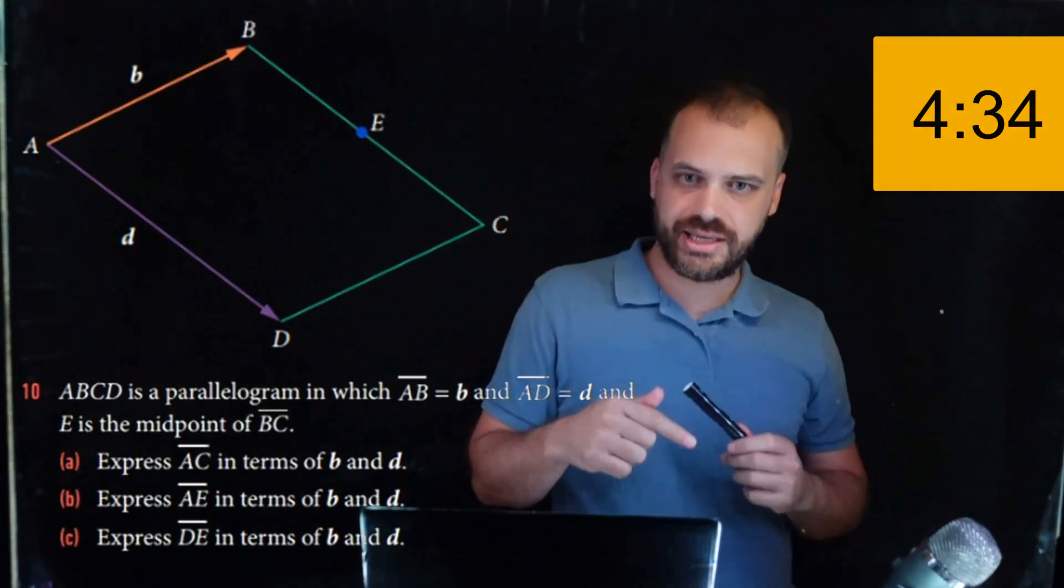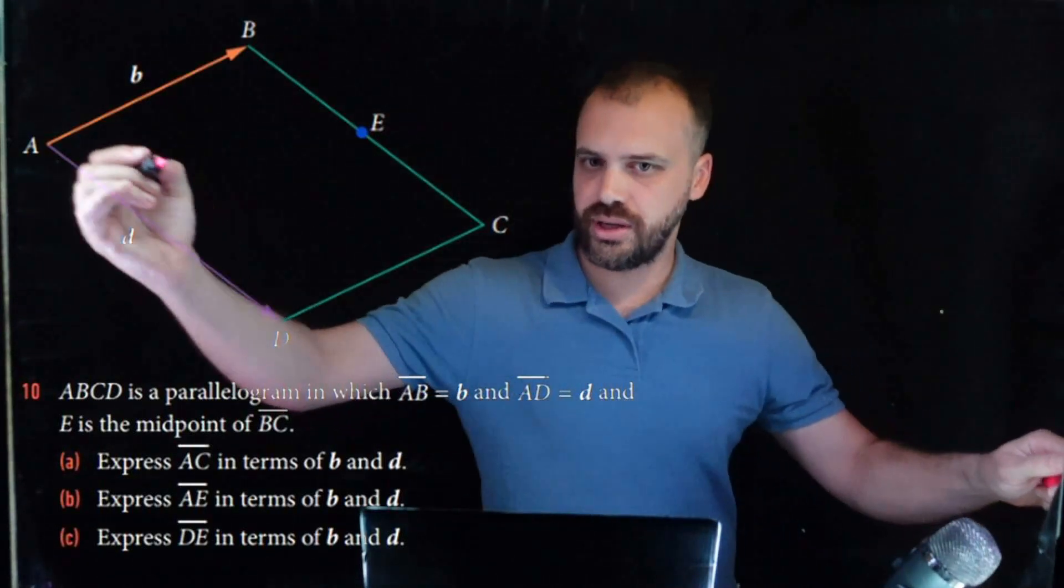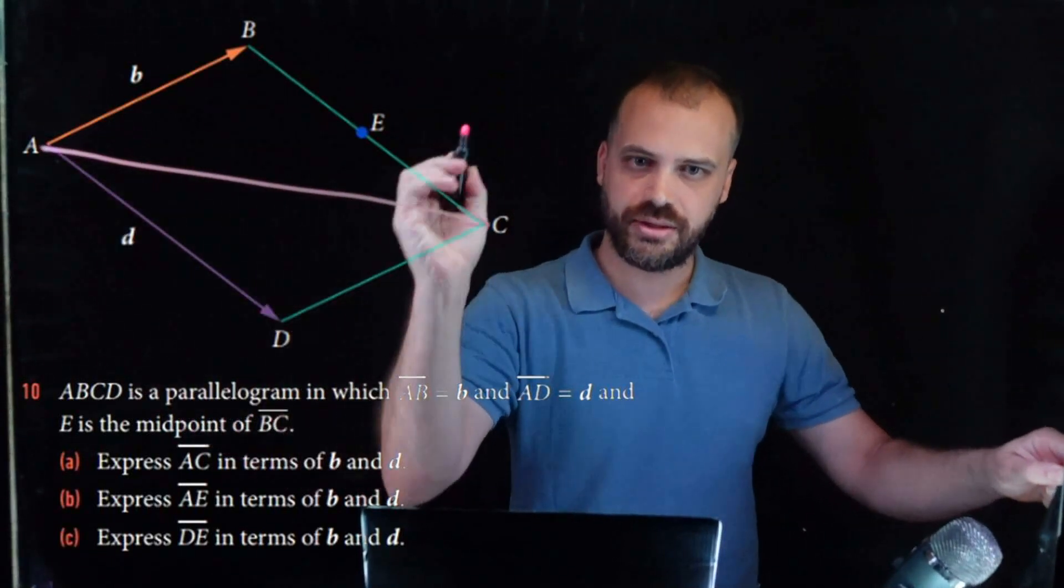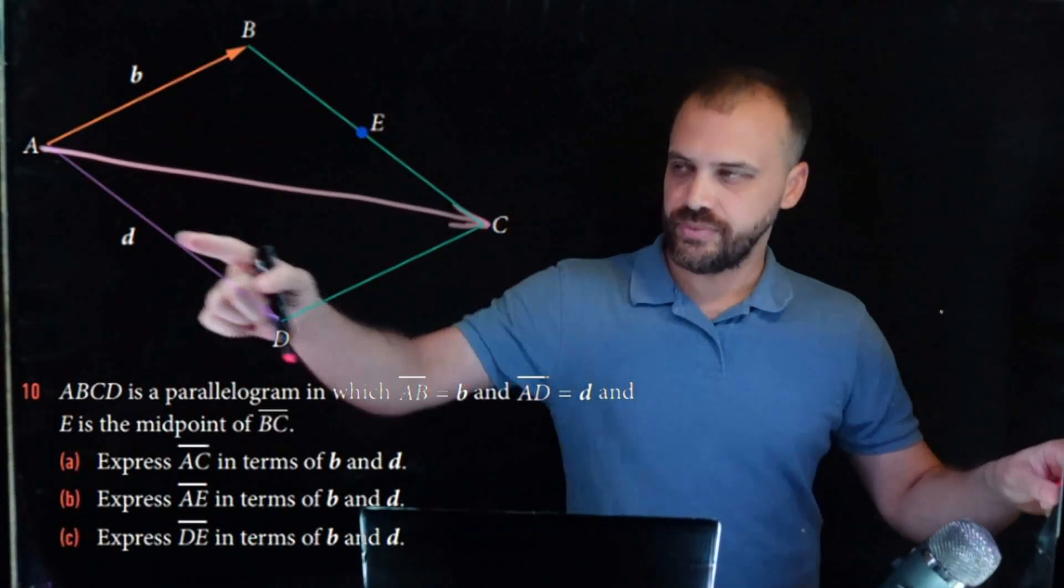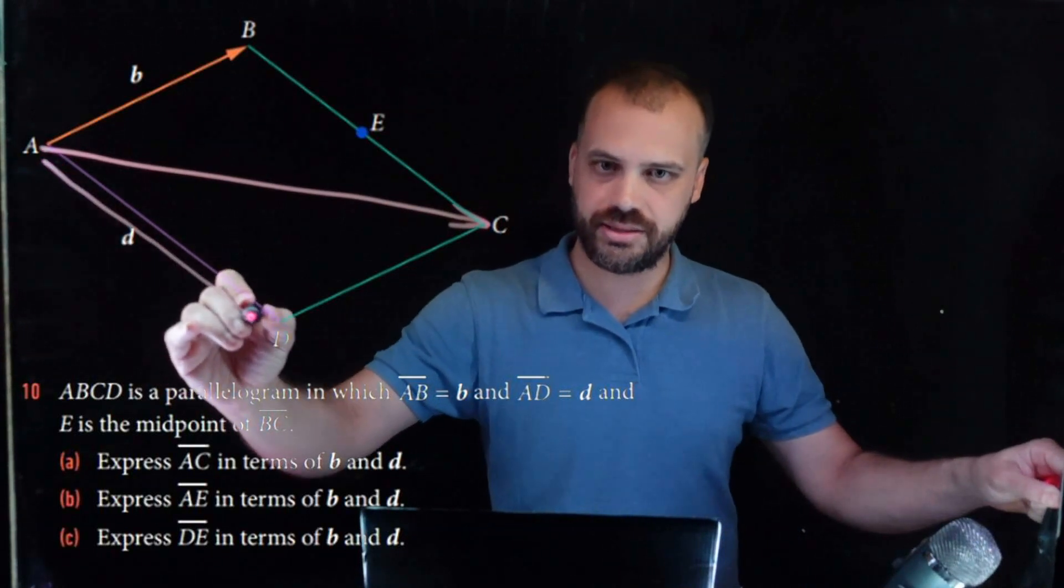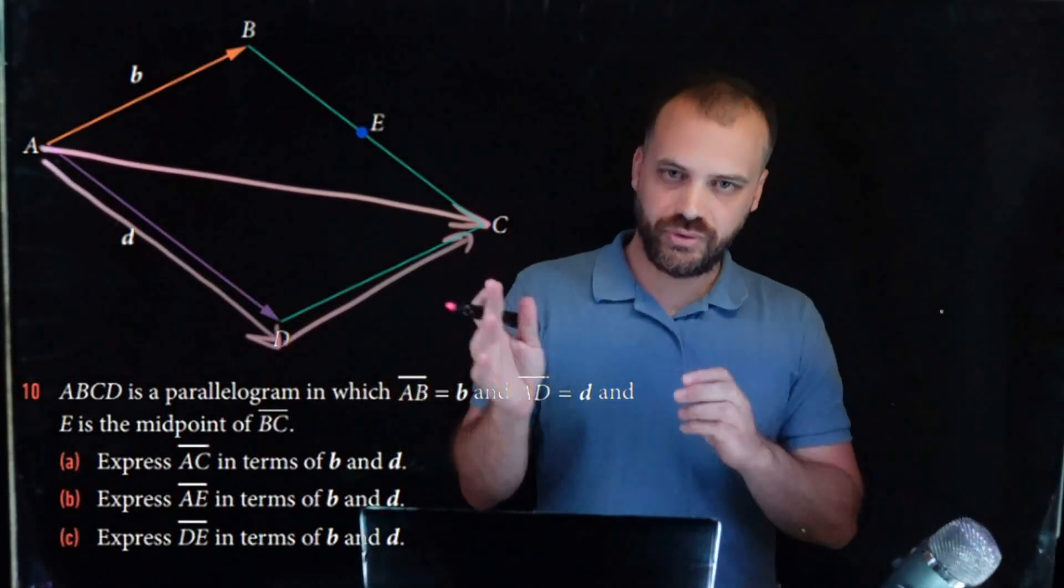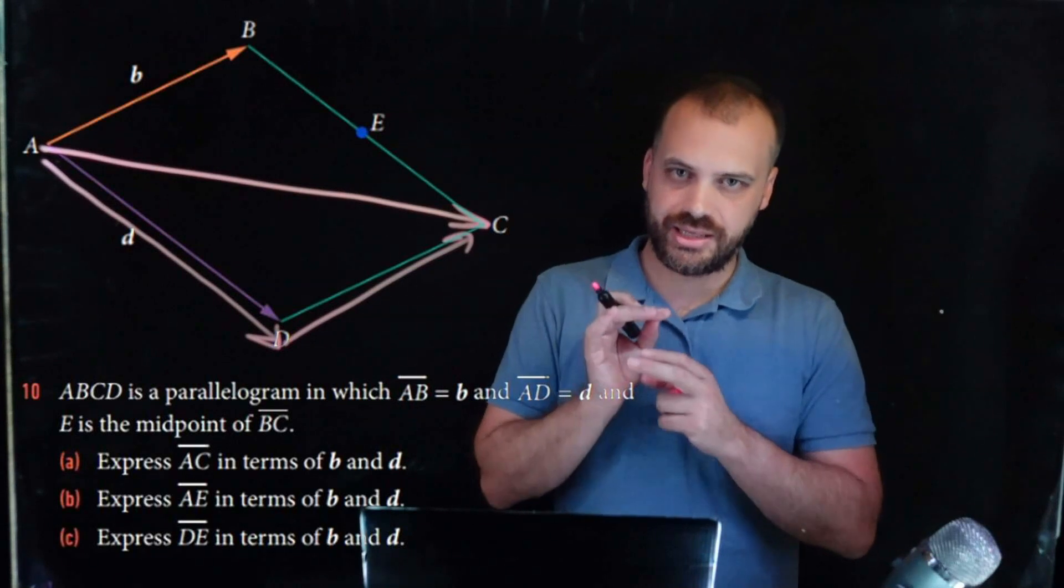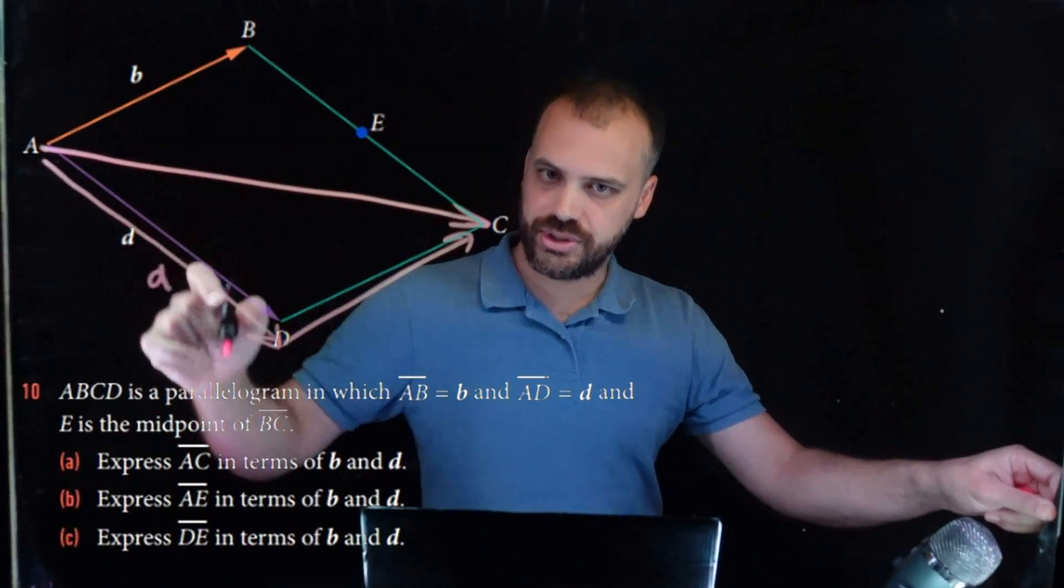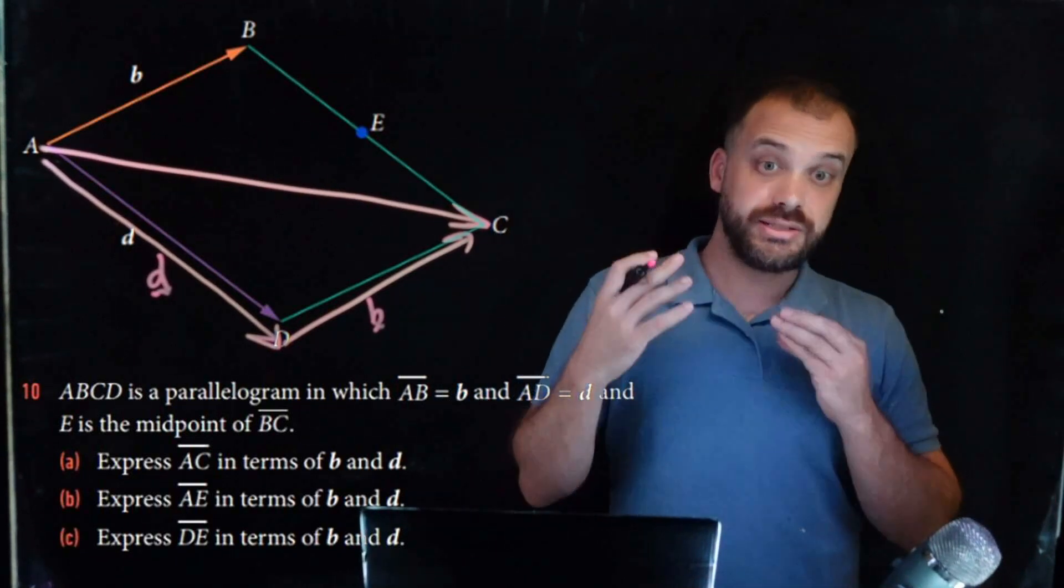Okay, so express AC in terms of B and D. If we want to know vector AC, the way to figure out AC is to move along there and along there. So AD plus DC equals AC. So if we want to express AC in terms of B and D, it's going to be equal to D, which is that vector right there, plus B, which is that vector right there, D plus B.